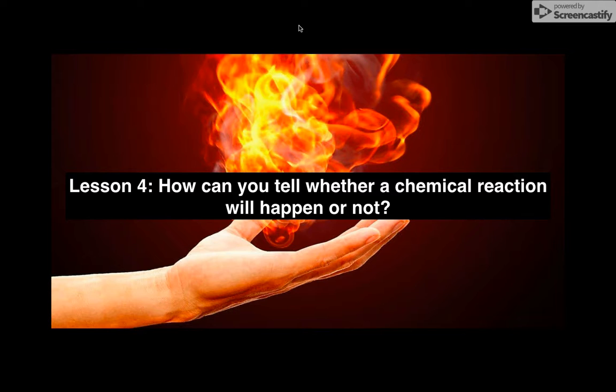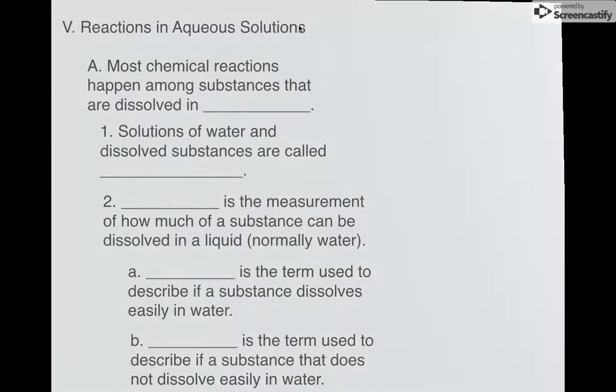Today, we're going to be going over this question: how can you tell whether or not a chemical reaction is going to happen or not? This isn't really like the signs of chemical reactions, which we've talked about extensively, but if you were to mix two solutions together, how are you going to know whether or not you're going to actually get a reaction, form a solid or something, or how are you going to know that nothing will actually happen?